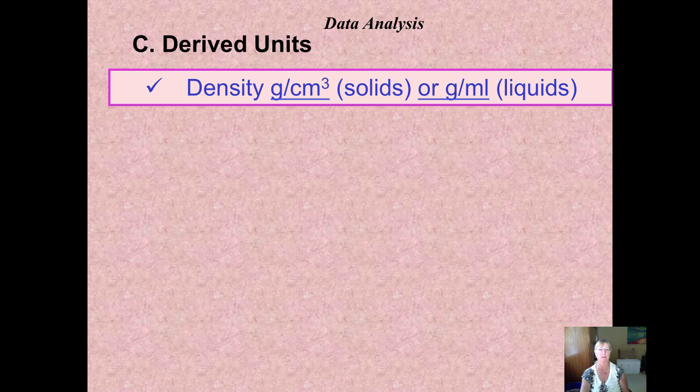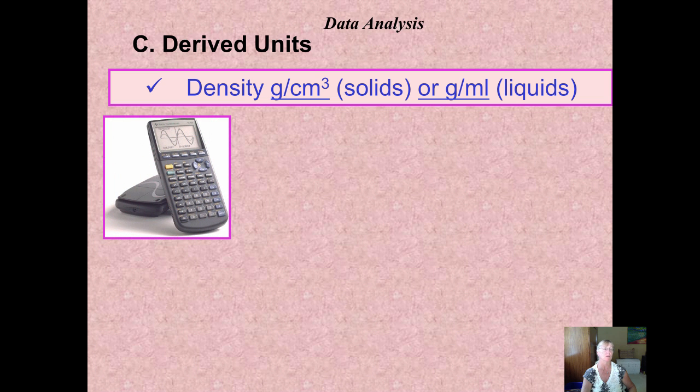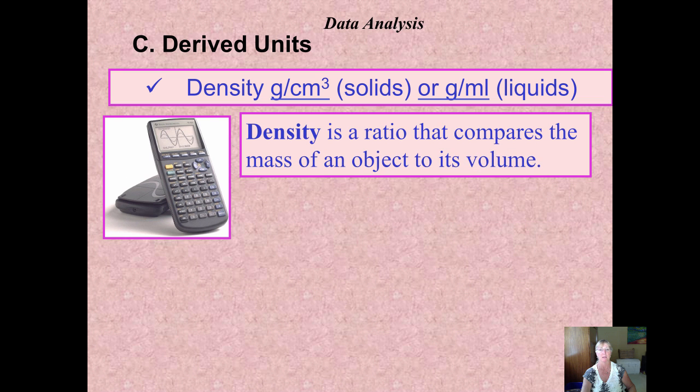So back to these derived units, here I have a combination of a mass, grams, over cubic centimeter, or milliliter. That's a unit of volume. Derived units use two or more of the units that make up the seven base units.